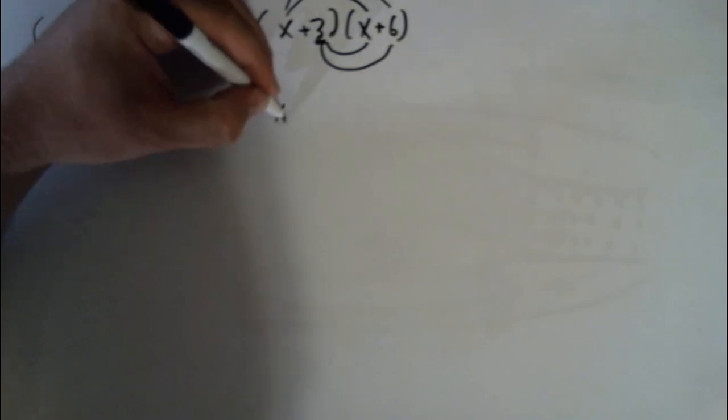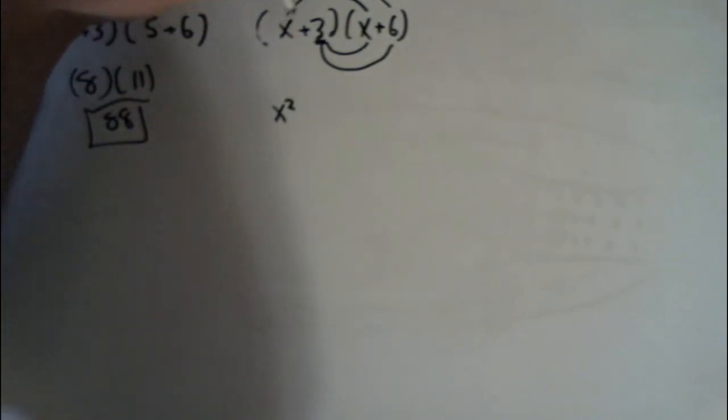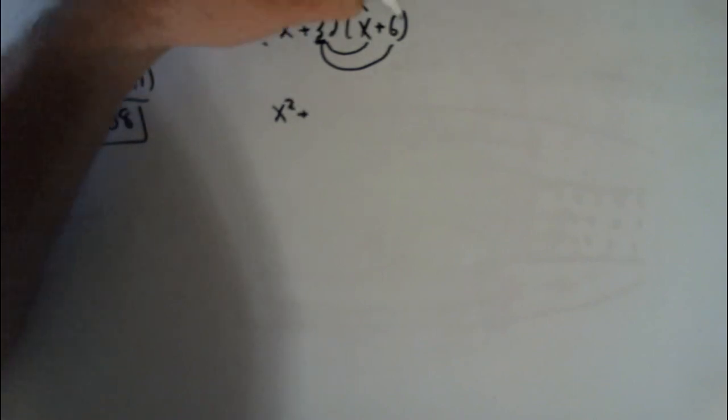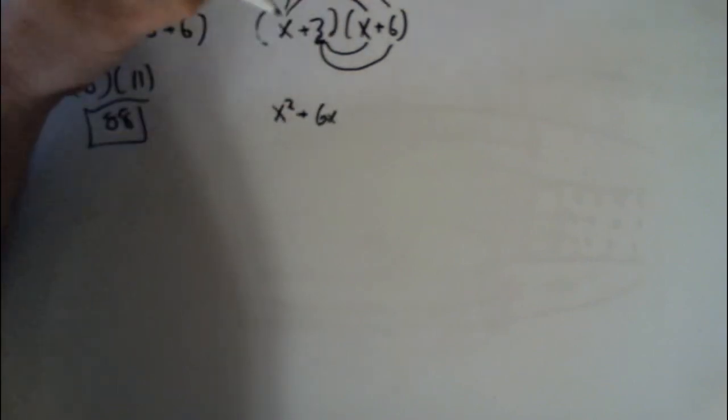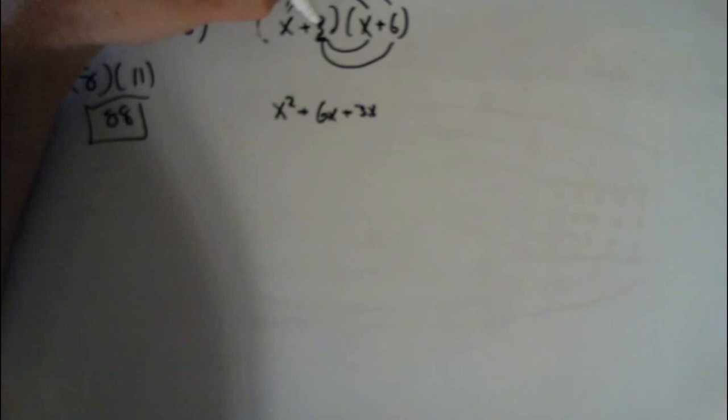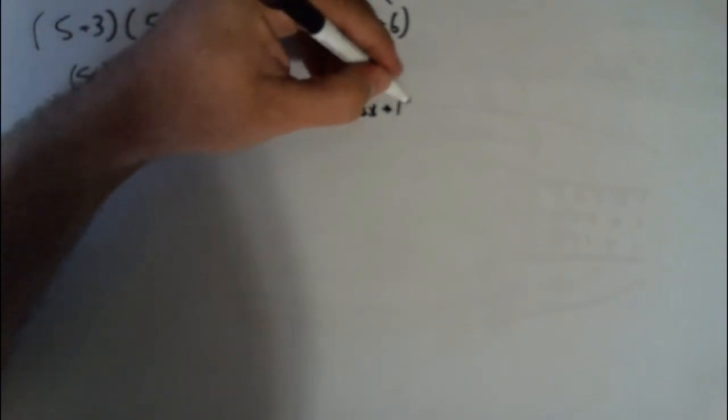So I'm going to have x times x, x squared. And then plus x times 6, 6x. And then plus again, 3 times x. And then plus again, 3 times 6, 18.